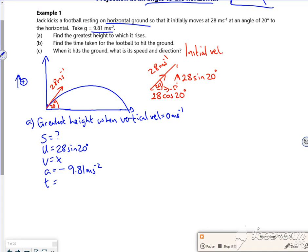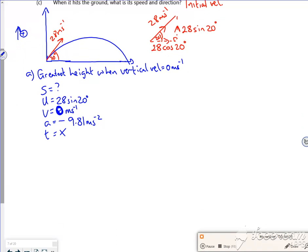T I'm not fussed about, so what equation doesn't have T? That's going to be V squared equals U squared plus 2aS. So what have we got? Zero squared is 28 sine 20 degrees all squared plus two times by minus 9.81 times by S.